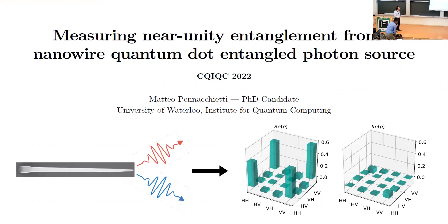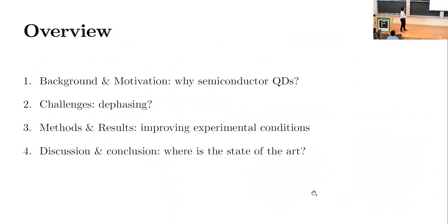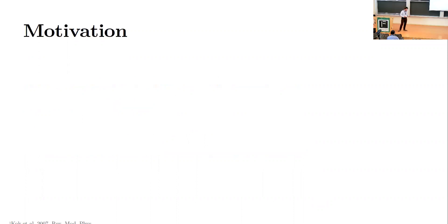Hello everybody, thanks for coming. I'm a PhD candidate at the University of Waterloo and we work with nanowire quantum dot photon sources. This is a schematic of the two photons we get out and the reconstructed density matrix. I'm going to motivate why we want to use semiconductor quantum dots to produce quantum sources of light, talk about challenges these sources have faced, what we've done to overcome them by improving experimental conditions, and then conclude and discuss where we are and where we need to be moving forward.